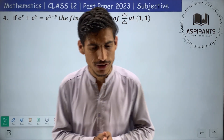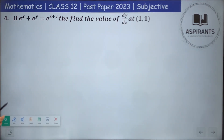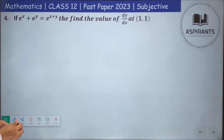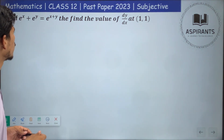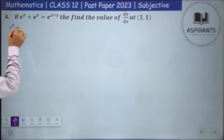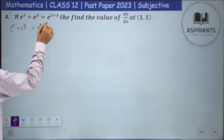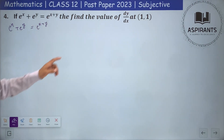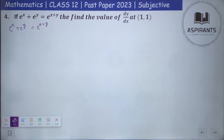Basically, in the question, we are going to focus here. So, if x to the power x plus x to the power y is equal to x to the power of x plus y, then find the value of dy by dx.